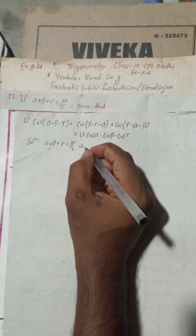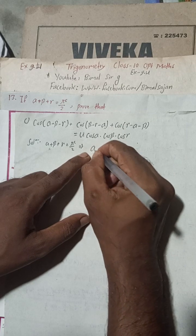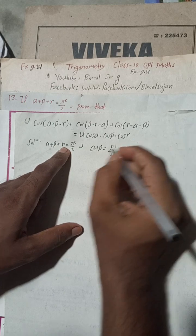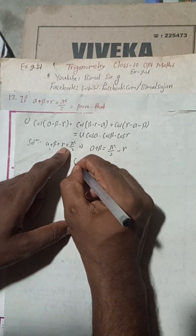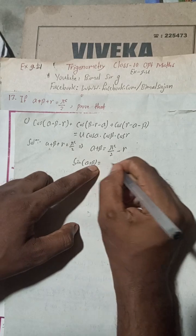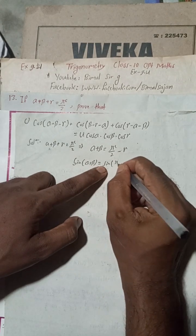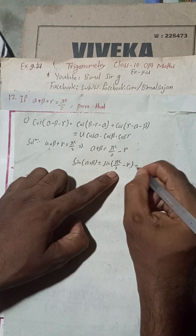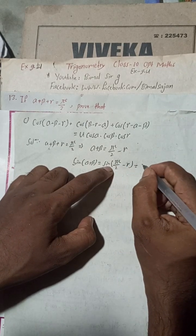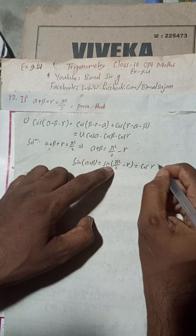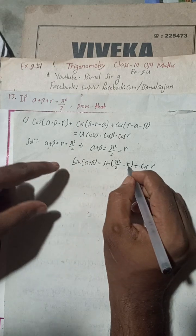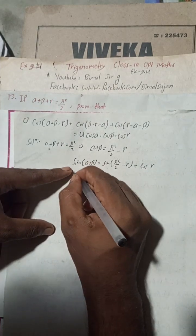This implies alpha plus beta is equal to pi/2 minus gamma. Taking sine on both sides: sine(alpha + beta) equals sine(pi/2 minus gamma). Since pi/2 is 90 degrees, this becomes cos gamma, and it is positive as it is in the first quadrant — that is, 90 minus gamma.